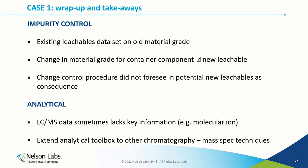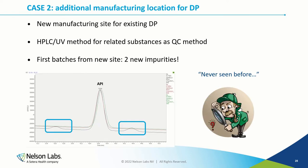The key takeaways for this case: regarding impurity control, there was an existing leachables dataset on the old material grade, but a change in the material grade for that particular container component led to a new leachable emerging. The change control procedure did not foresee that potential new leachable as a consequence. From an analytical point of view, LC-MS data sometimes lacks key information — like confirmation of the molecular ion here — so it's always good to extend your analytical toolbox to other chromatography-mass spectrometry techniques.